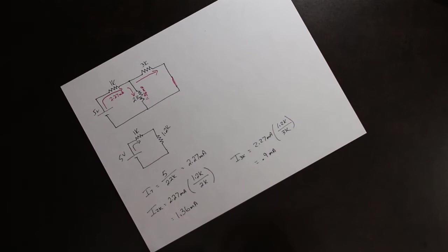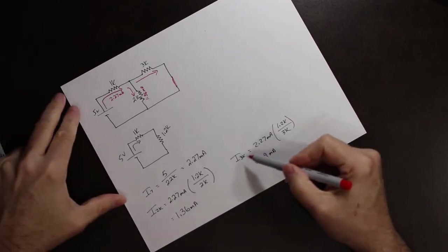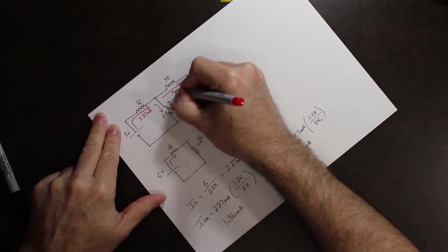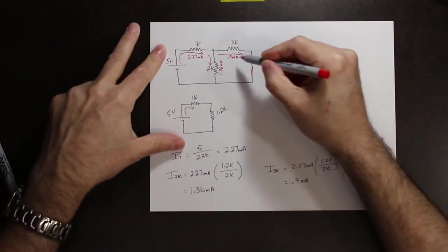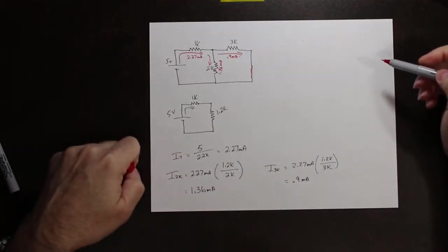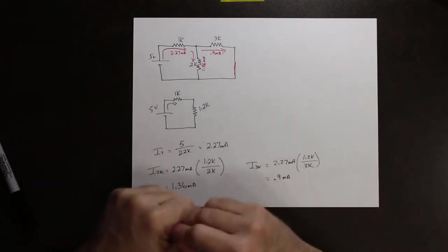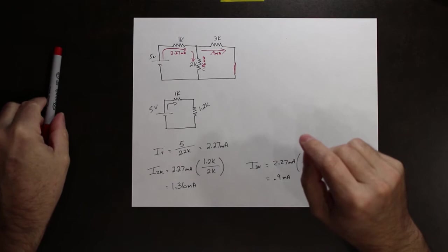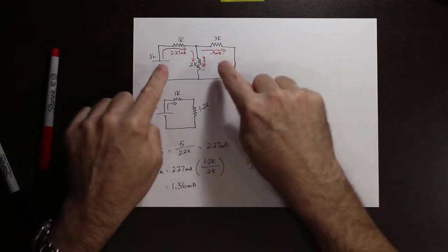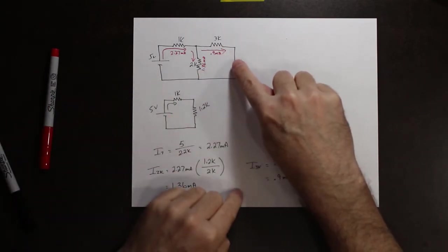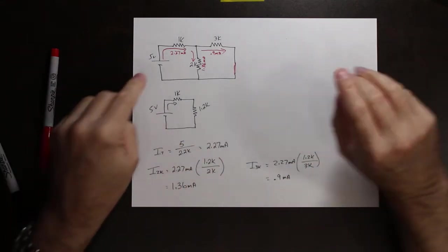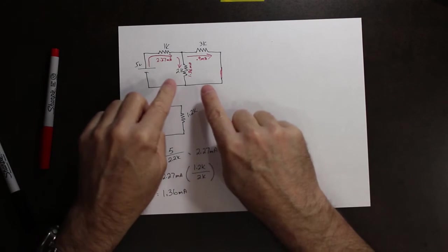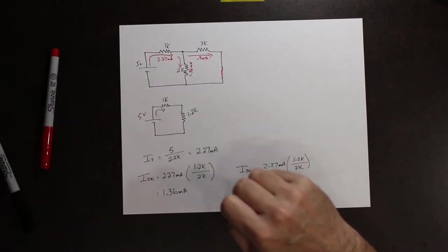So that means when we apply the 5-volt supply, it is 0.9 milliamps going in that direction through the 3k resistor. Those are the values for that circuit — the 10-volt supply is removed and the 5-volt supply is kept in place. These are the currents being produced by the 5-volt supply.